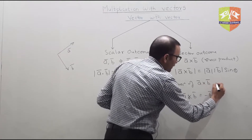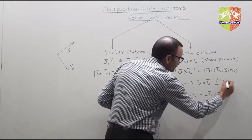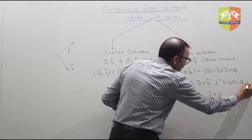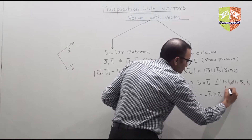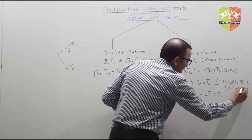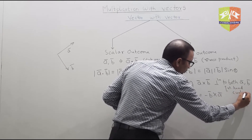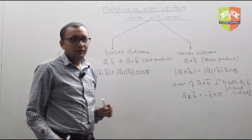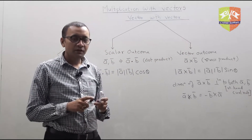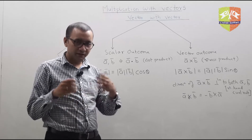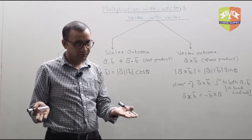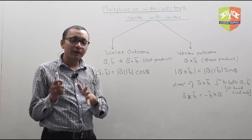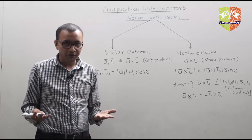The direction of a cross b is perpendicular to both a and b, and you have to use the right-hand curl rule to uniquely define the direction, because perpendicular to both a and b there are still two possible directions. This is how you use multiplication operations with vectors.